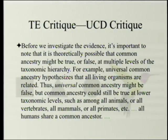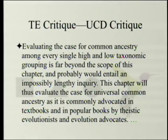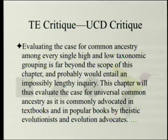Before we investigate the evidence, it's important to note that common ancestry might be true or false at multiple levels of the taxonomic hierarchy. Universal common ancestry hypothesizes that all living organisms are related. It might be false universally, but common ancestry could still be true at lower taxonomic levels — among all animals, all vertebrates, all mammals, or all primates. Most of us accept that all humans share a common ancestor. Evaluating common ancestry among every taxonomic grouping is far beyond the scope of this chapter. This chapter will evaluate the case as commonly advocated in textbooks and popular books by theistic evolutionists.